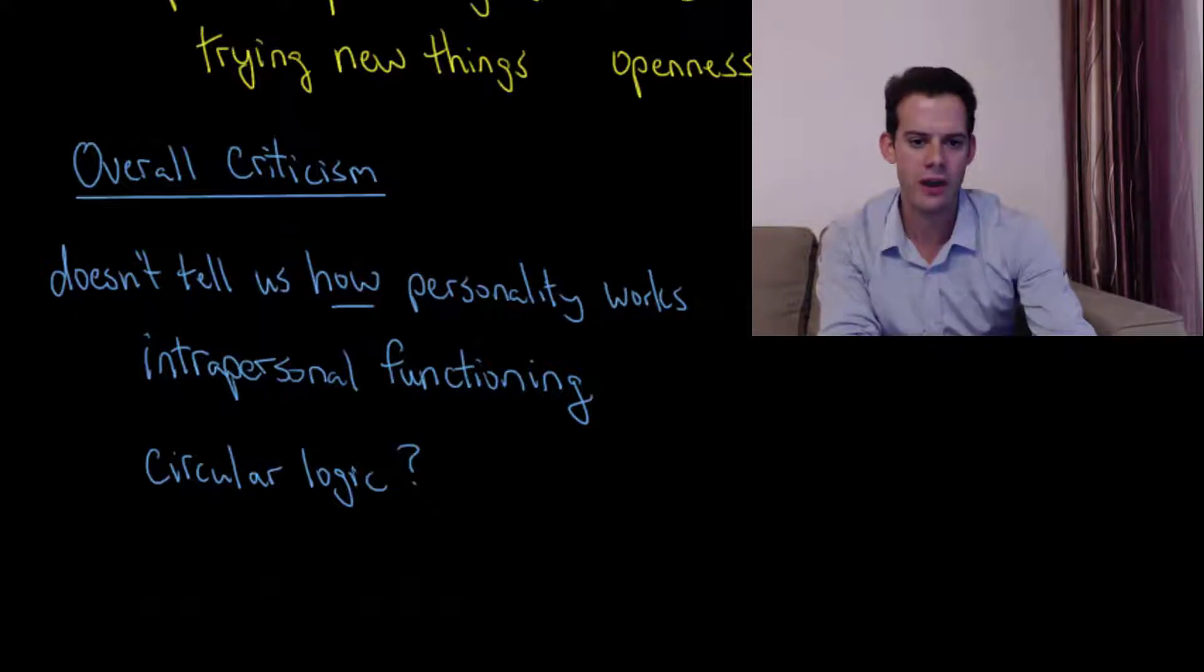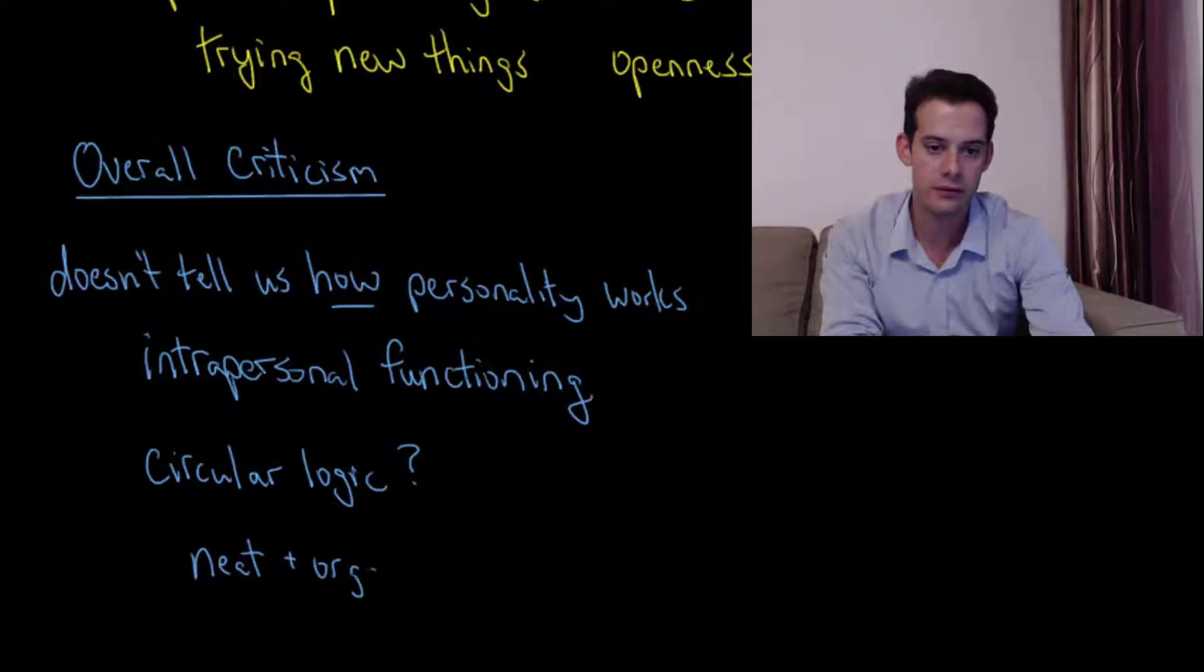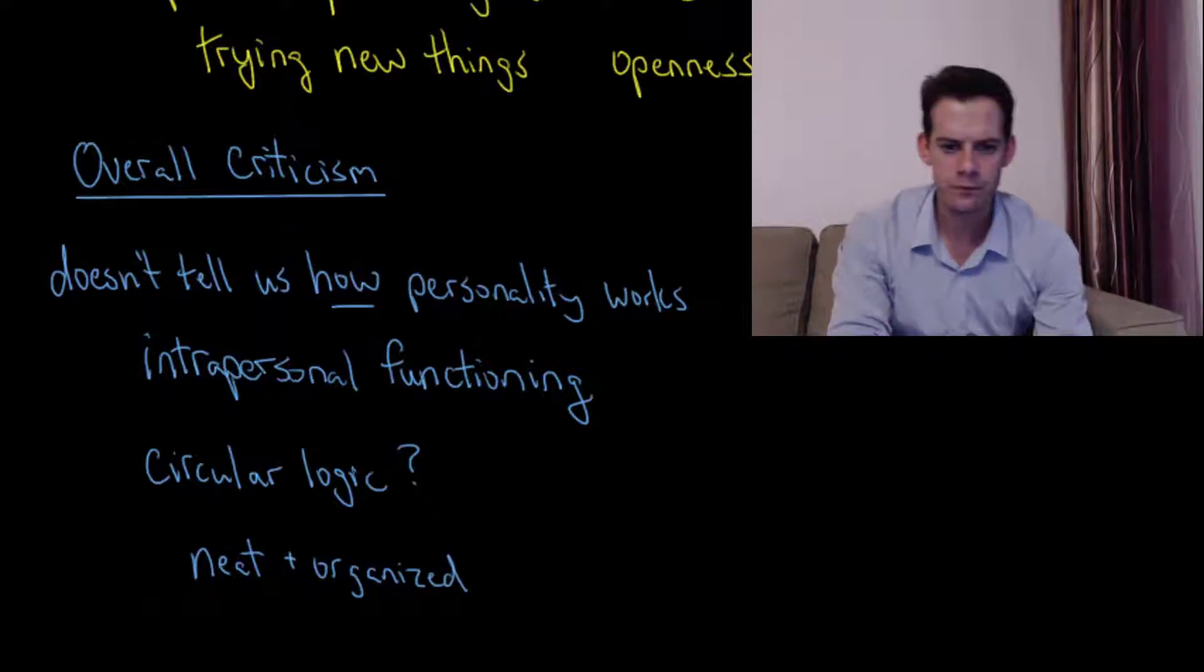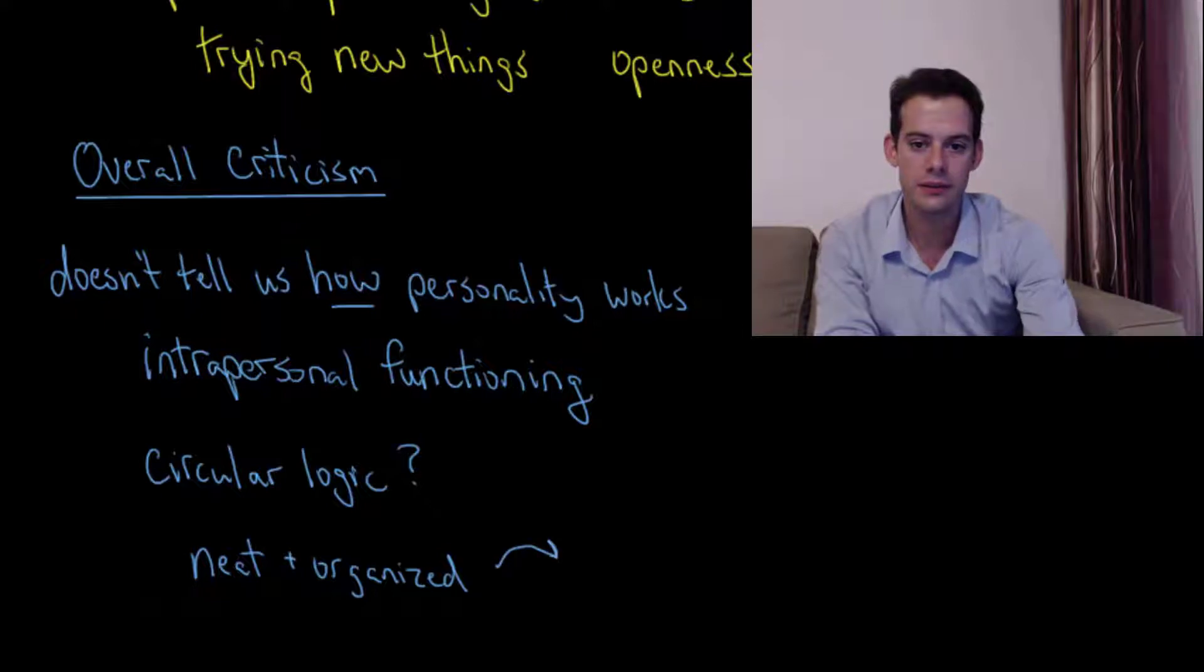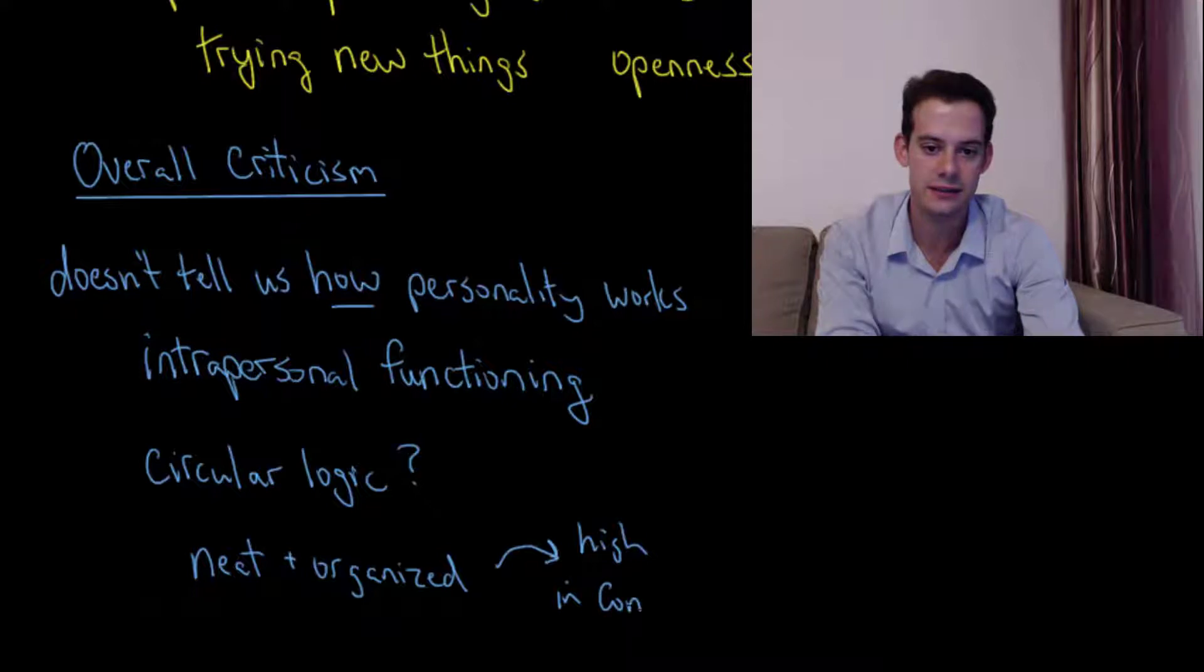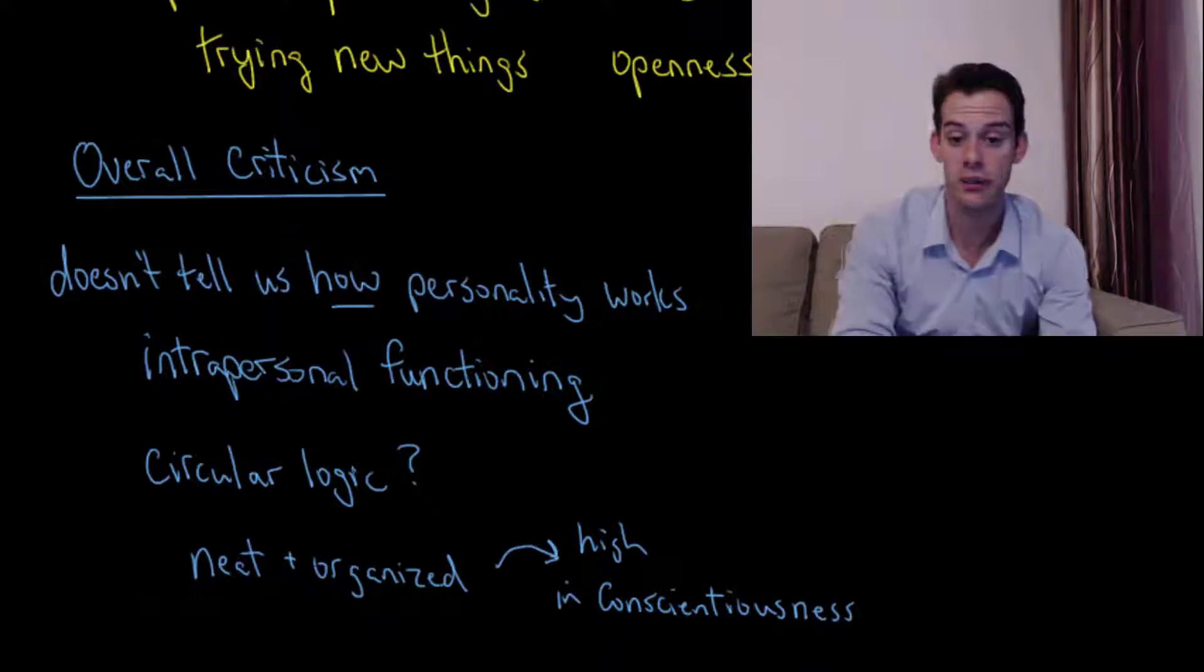So for example, we could say, we have Jill and Jill is very neat and organized. Well, why is it that Jill is very neat and organized? What's the explanation for this? And the answer that we have with trait-based assessment is, well, Jill is very neat and organized because she is high in conscientiousness. And that seems to be a bit of an explanation. Here's her behaviors. Why are these happening? Well, she's high in conscientiousness.